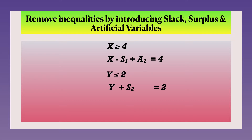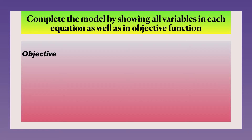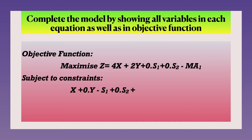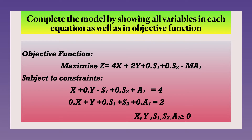For the first constraint (≥ type): a surplus variable is subtracted and an artificial variable is added, converting the inequality to an equation. For the second constraint (≤ type): a slack variable is added, converting it to an equation. All variables must satisfy non-negativity constraints. The maximize Z equation becomes: Z = 4x + 2y + 0·s1 + 0·s2 − M·a1, since it is a maximization problem. The first constraint: x − s1 + a1 = 4; second constraint: y + s2 = 2.